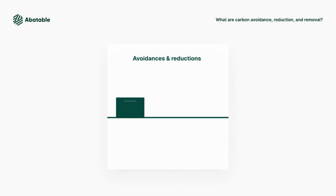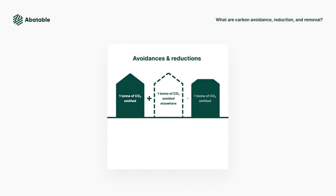The first category is carbon avoidance. This project type includes predominantly forest conservation projects, where the focus is on implementing activities which avoid the release of emissions from the conversion of forests into severely deforested or degraded lands.